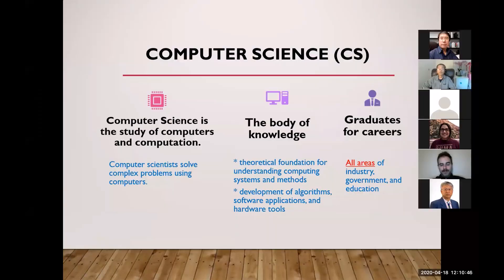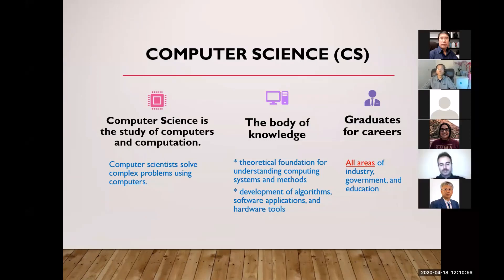Computer science is the study of computers and computations. Computer scientists basically try to solve mostly complex problems. In order to solve those problems, we need proper background and skills. The body of knowledge in computer science includes the theoretical foundation of CS, understanding how computers work, computer system methods, developing algorithms, software applications, and hardware applications. Graduates can start careers in almost every area of industry, government, and education.